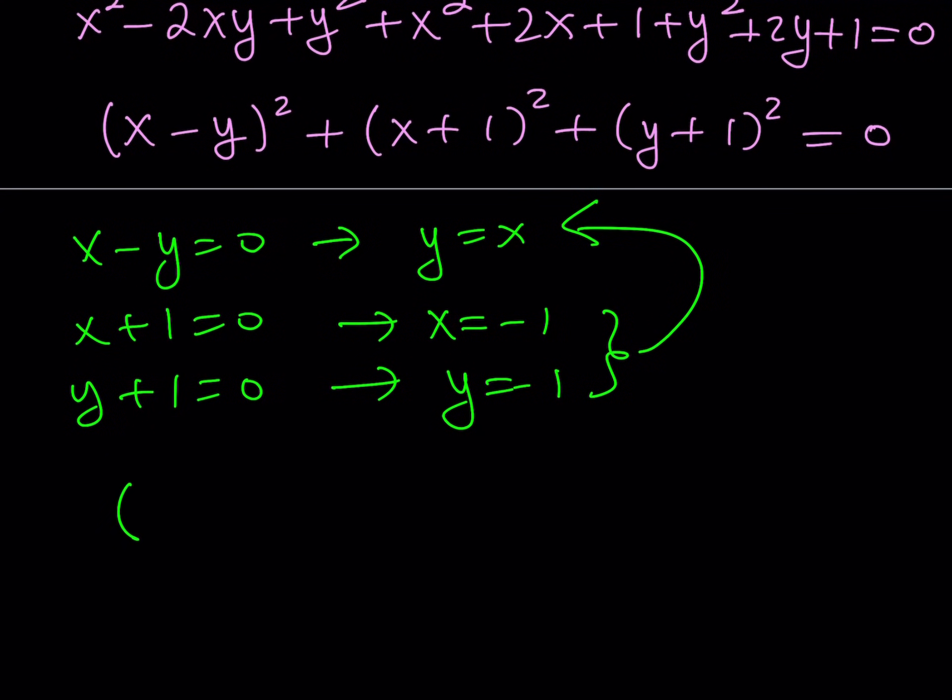And this is going to give you the ordered pair negative 1 comma negative 1. And remember, the other solutions were like t comma 1 minus t, where t is a real number. So we kind of got like two types of solutions: a particular one like negative 1 comma negative 1, and a more generic one where you can just pretty much use all values.